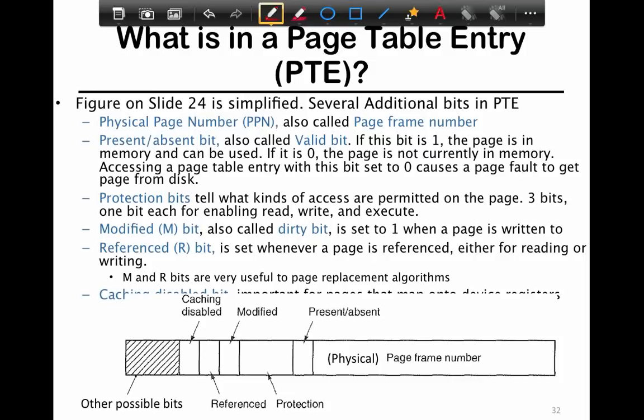First we're going to look at what each entry looks like, and then the data structure itself. Fundamentally, the first thing it's got to hold is the physical page number, because that's what the page table exists for. It has a physical page number that is used for specifying what the translation is.